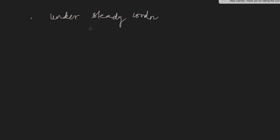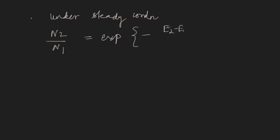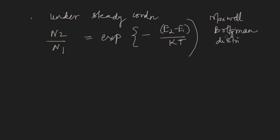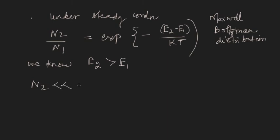The atoms follow the Maxwell-Boltzmann distribution, which is given as N2 by N1 equals exponential of minus (E2 minus E1) divided by kT, where k is Boltzmann's constant and T is the temperature. This is the Maxwell-Boltzmann distribution law. We know that E2 is greater than E1.